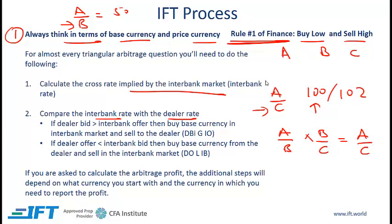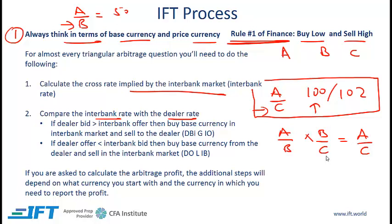We already have the dealer rate; we need to come up with the implied cross rate based on the interbank rates. To calculate A over C bid, we multiply A over B bid by B over C bid. A over C offer is going to be the A/B offer times the B/C offer. Once we calculate this implied interbank rate, it needs to be compared with the rate being offered by the dealer.